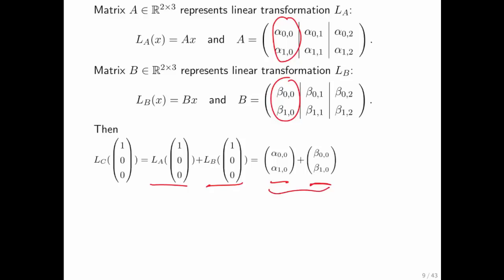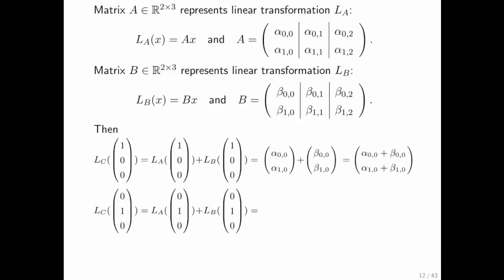Since those are two vectors, we know how to add them. And we get that right there. In goes the second unit basis vector. Evaluate LA and LB. Out come the second columns. We know how to add those two vectors. And we get that right there. Same thing for the third unit basis vector.